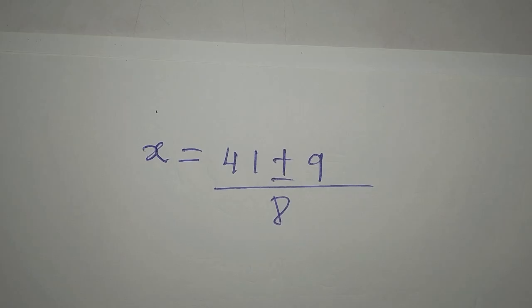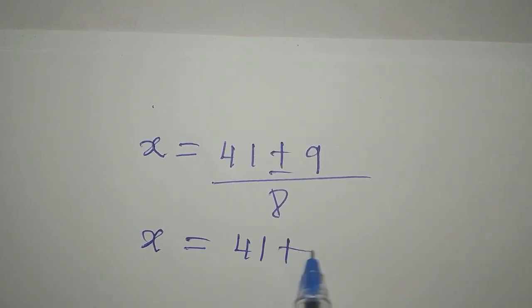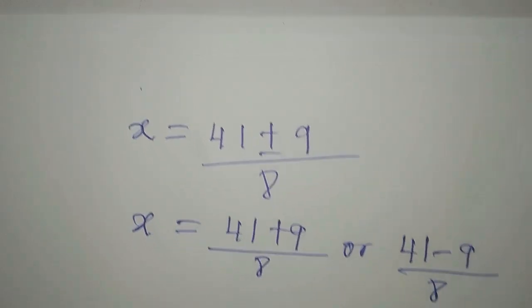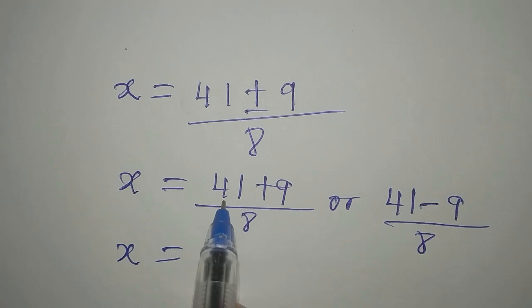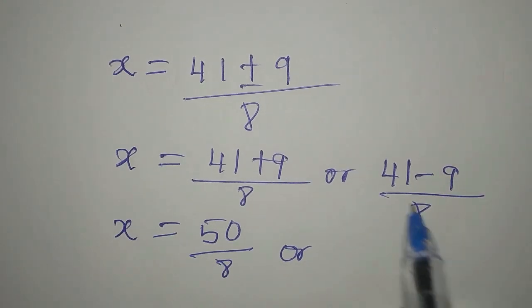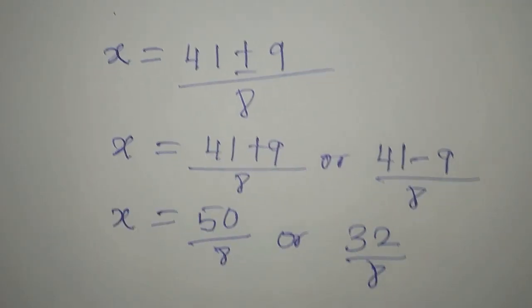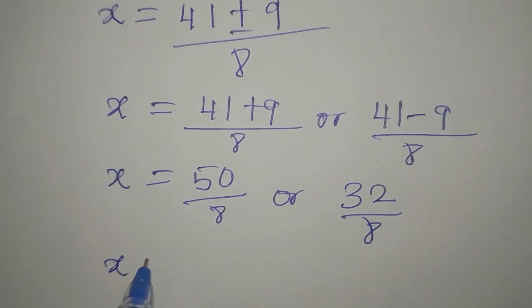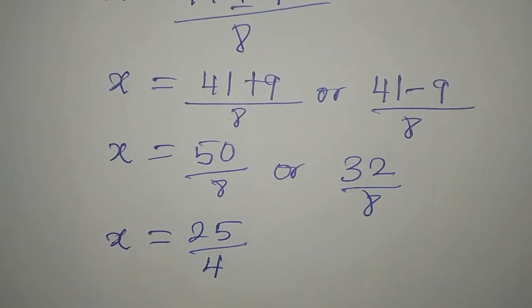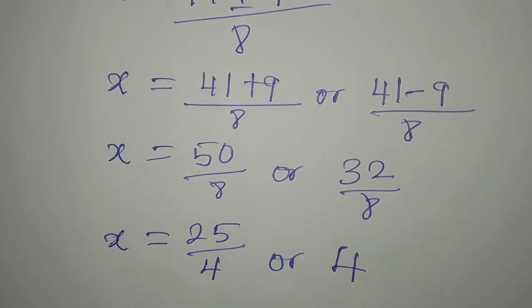Since we have plus or minus, x equals 41 plus 9 over 8, or 41 minus 9 over 8. So x equals 50 over 8, or 32 over 8. Simplifying: 50 over 8 reduces to 25 over 4, and 32 over 8 equals 4.